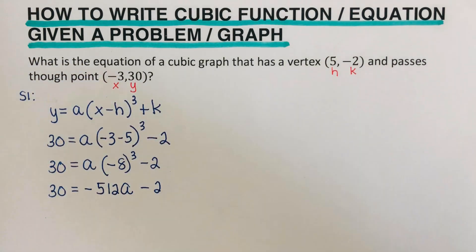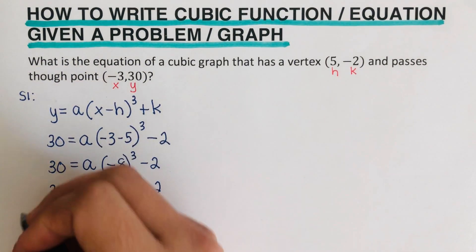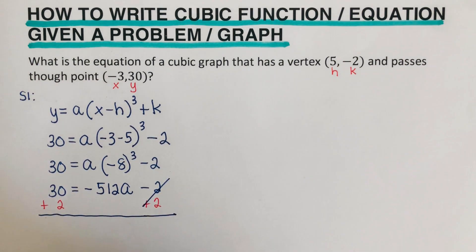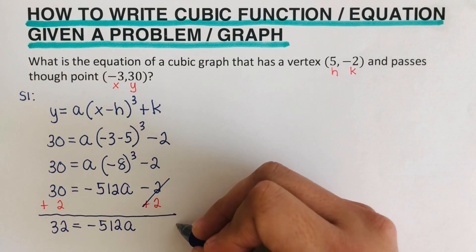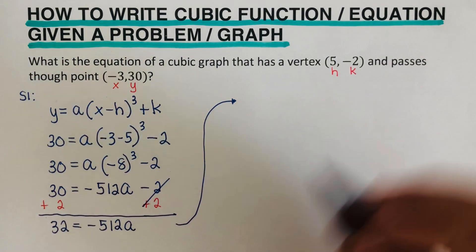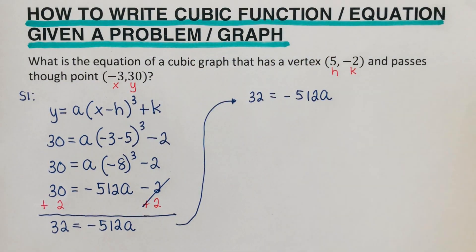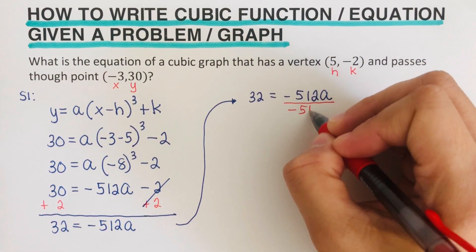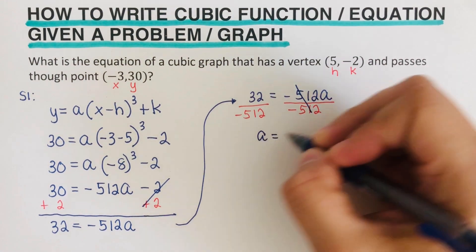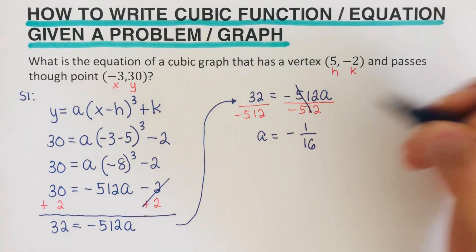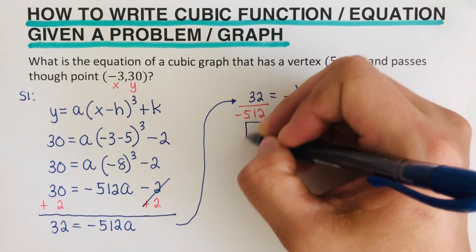We solve for A by adding 2 to both sides, which gives us 32 equals negative 512 A. Then dividing both sides by negative 512, our A is negative 1 over 16, because 32 goes into 512 sixteen times.